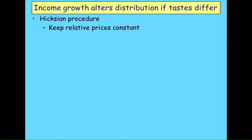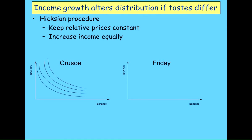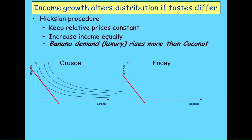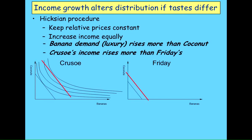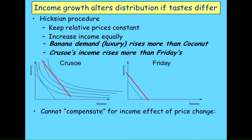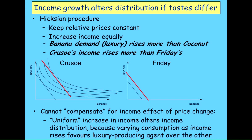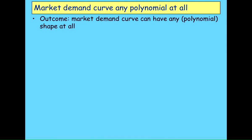What about when you try to do an income compensation — the Hicksian procedure? You keep relative prices constant and you increase incomes equally. We start from this position and then move those income curves out. But bananas are a luxury, so demand for bananas will rise more with an increase in overall income than coconuts. Therefore Crusoe's income will rise more than Friday's. So you therefore can't compensate for the income effect. A uniform increase in incomes will alter income distribution and therefore change consumption patterns and change income distribution again. The outcome is that the market demand curve can have any shape you can describe using a polynomial.